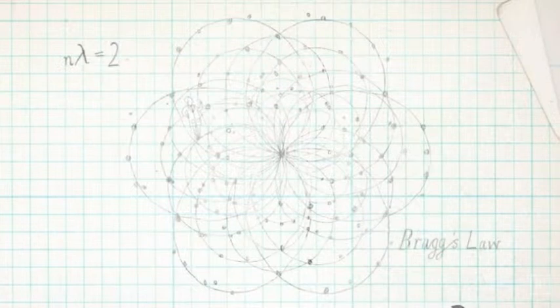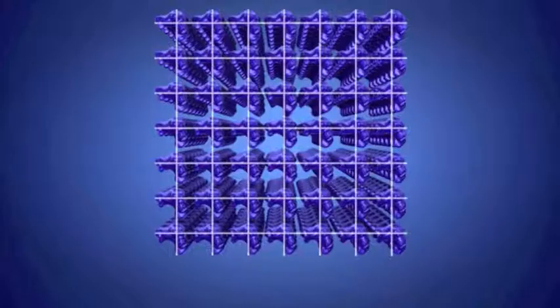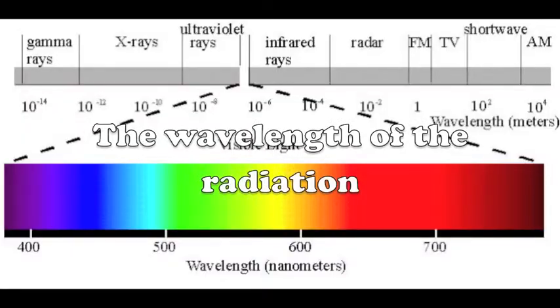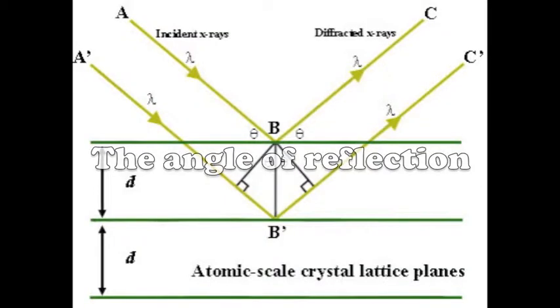As a consequence of their experiment, they developed Bragg's law. Bragg's law derives the relationship between the spacing of the crystal planes, the wavelength of the radiation, and the angle of reflection.